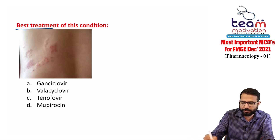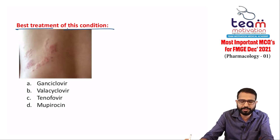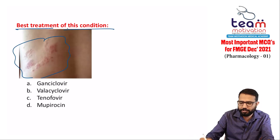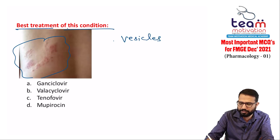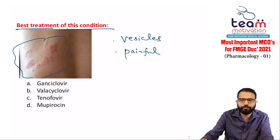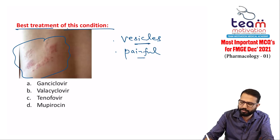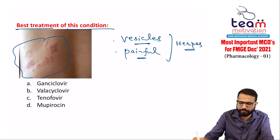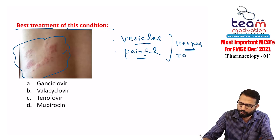Next is an image-based question showing vesicles. Painful vesicles always suggest herpes infection. The image shows vesicles involving a single dermatome — typically herpes zoster. Varicella zoster causes chicken pox all over the body. Herpes simplex affects the lips (labialis). Herpes keratitis affects the eyes. Herpes type 2 causes genital herpes.